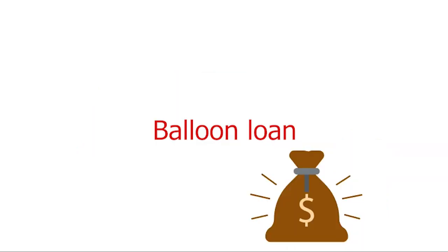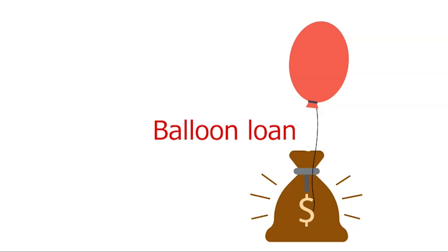Balloon Loan: according to the Consumer Financial Protection Bureau (CFPB), a balloon loan is a larger-than-usual one-time payment at the end of the loan term. If you have a mortgage with a balloon payment, your payments may be lower in the years before the balloon payment comes due, meanwhile you owe a big amount at the end. In other words, in a balloon loan, there is a lump sum payment to be made at the end after a series of initial payments.